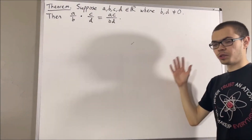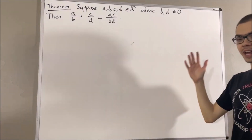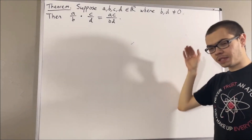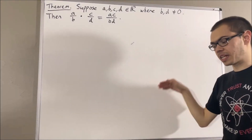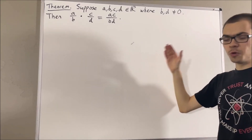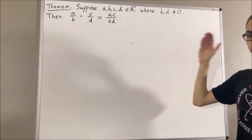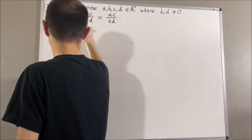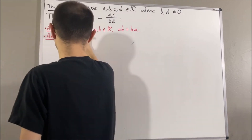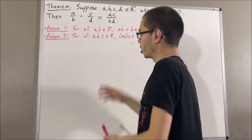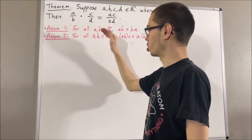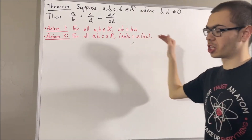Now in this series, we are using a list of 10 axioms for the real number system. I'll leave that list of axioms in the description below. In this video, we are going to be using axioms 1 and 2, which are just the commutative and associative laws.